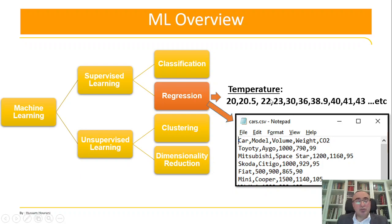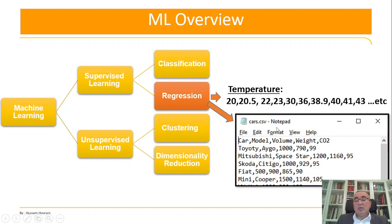Regression is about predicting continuous values, for example predicting the temperature for today or tomorrow — it might be 20, 20.5, 22, 23, etc. There are an infinite number of possible predictions. We'll use a cars.csv file. The dataset has car model, volume, weight, and CO2. Based on the volume and weight, can we predict the CO2? That's what we'll do in today's example.